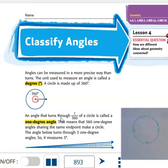An angle that turns through 1/360th of a circle is called a one-degree angle. That means that 360 one-degree angles sharing the same endpoint make a circle.